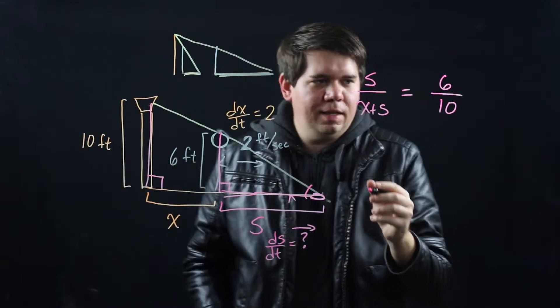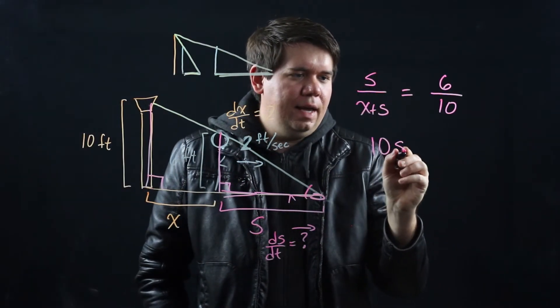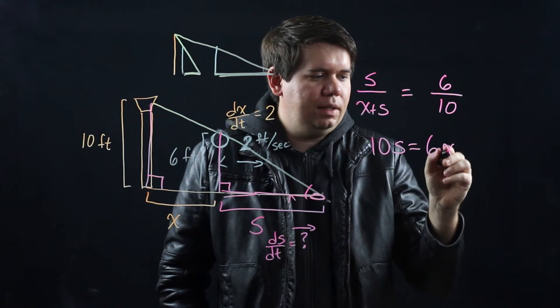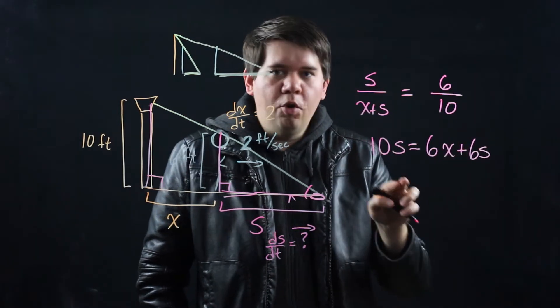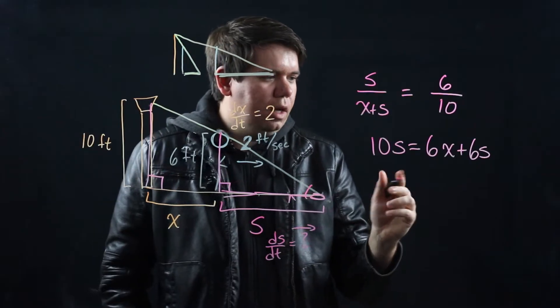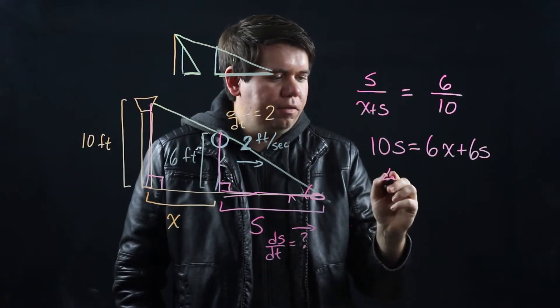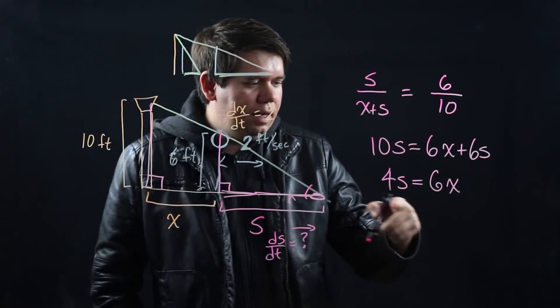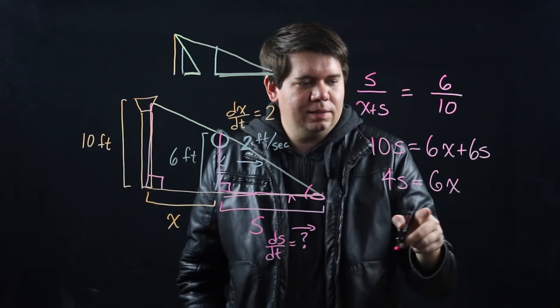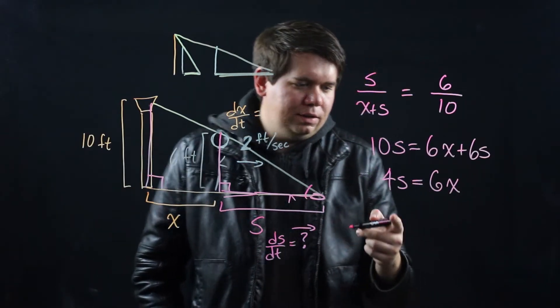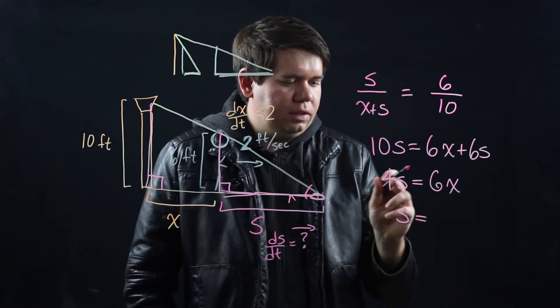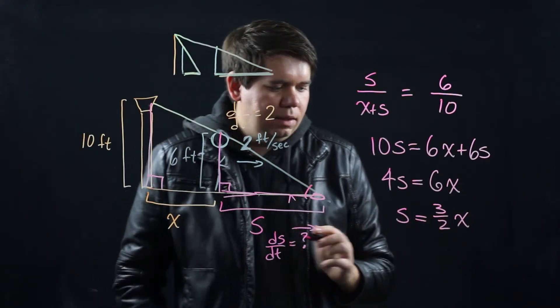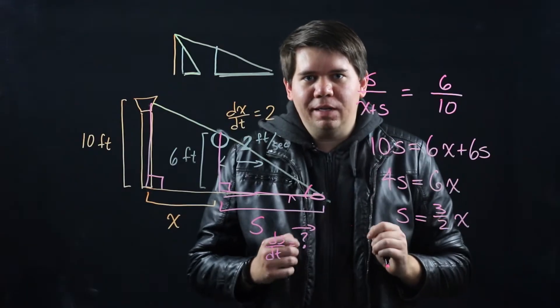Cross multiplying then gives us that 10s equals 6 times x plus s, so 6x plus 6s. Move that 6x over, move the 6s over, you get 4s equals 6x. And here's a nice relationship between s and x. Of course, you can simplify this or we could say s equals 6 fourths, which is 3 halves of x. Now we have our relationship.